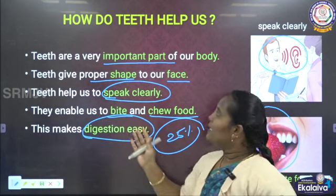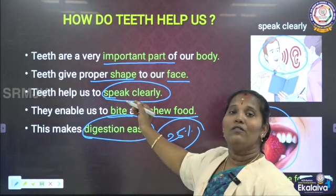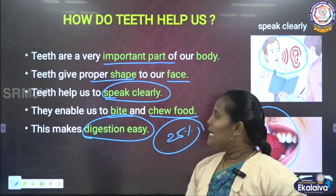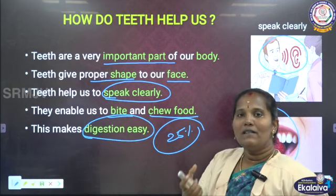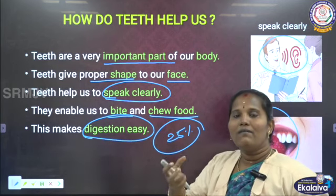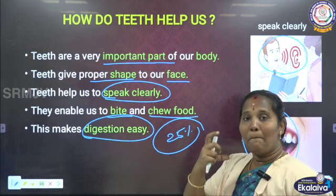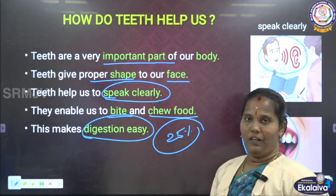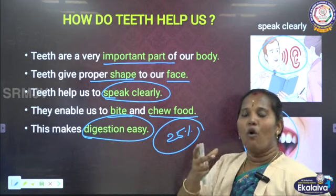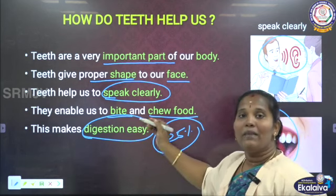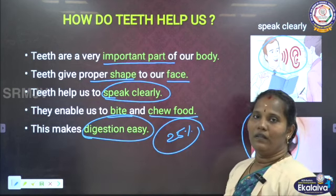What did we see about the teeth? Teeth are a very important part of our body. It gives the proper shape to our face, as well as it helps us to speak clearly - the words delivered will be very clear with the help of our teeth. And teeth help us bite and chew the food. Without chewing, without biting, we cannot swallow the food as a whole. So digestion is made easy with the help of teeth. These are the uses of our teeth.